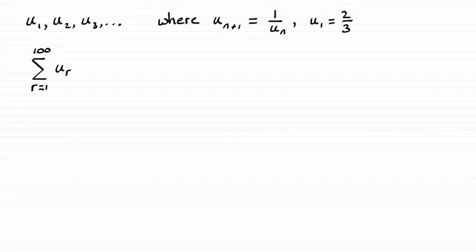For this part of the question, we've got this sequence of terms u1, u2, u3, and so on, where any term in the sequence is equal to one divided by the previous term. We're told the first term u1 is two thirds, and we've got to find the sum of the first hundred terms of that sequence.